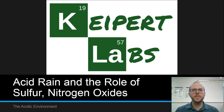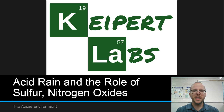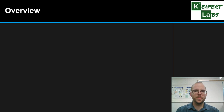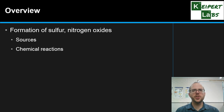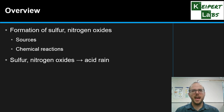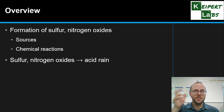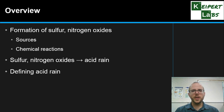Hi everyone. In this video we're going to be talking about the concept of acid rain and the role of sulphur and nitrogen oxides in the formation of acid rain. We're going to start off by thinking about the formation of these sulphur and nitrogen oxides — where they come from and how we can describe the chemistry of this process. Then we're going to think about how it links with acid rain, and spend a little time defining acid rain and outlining some of its effects.